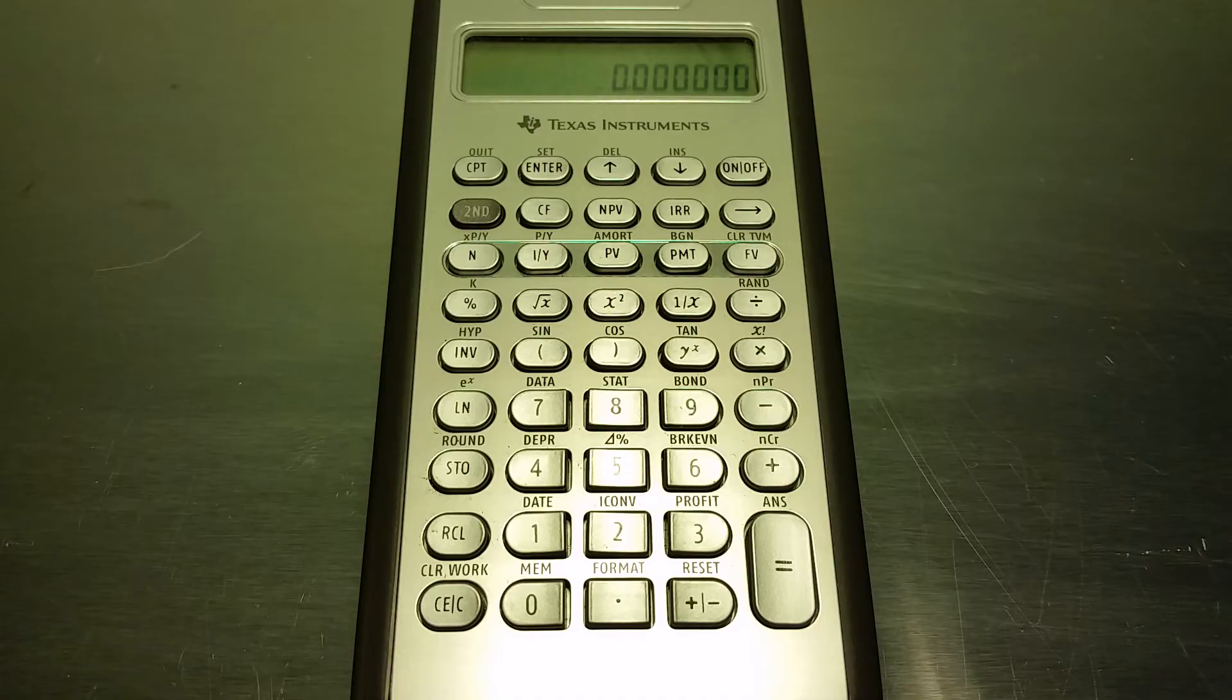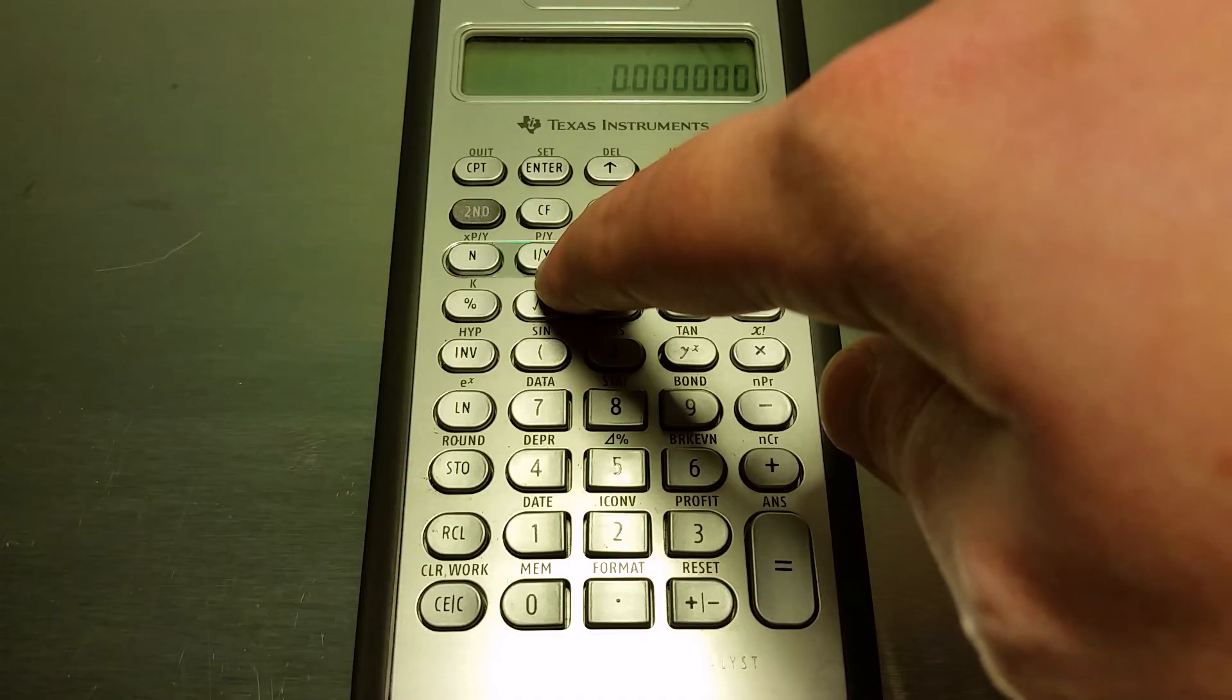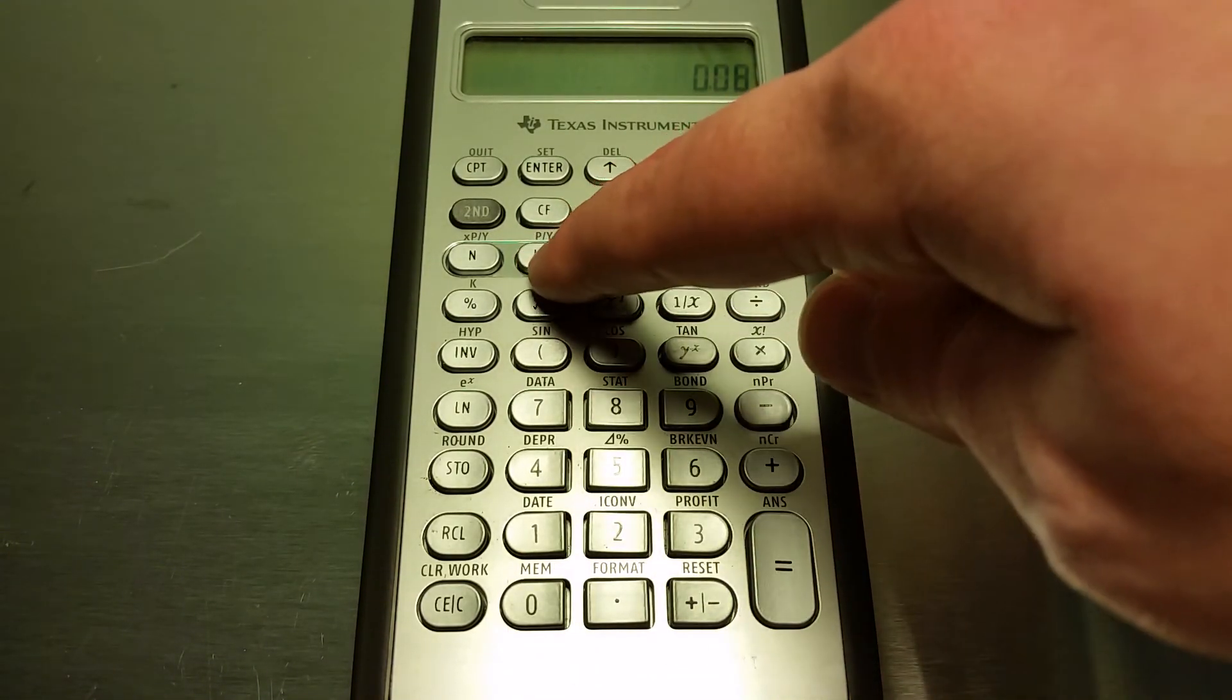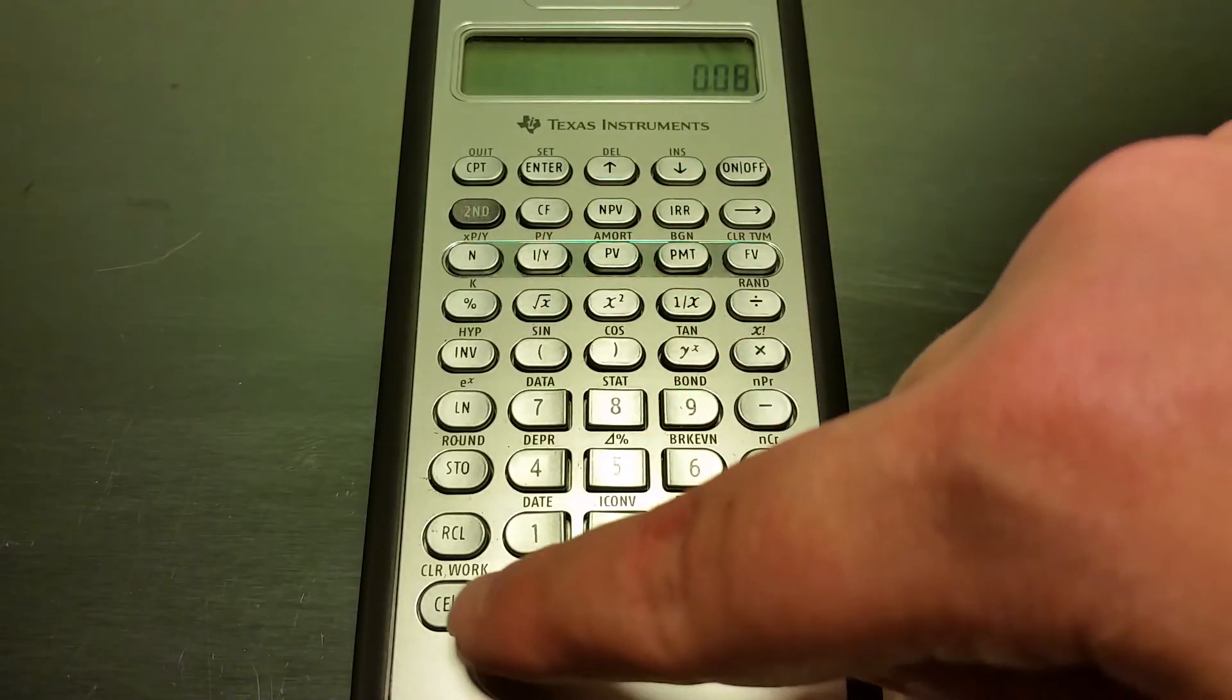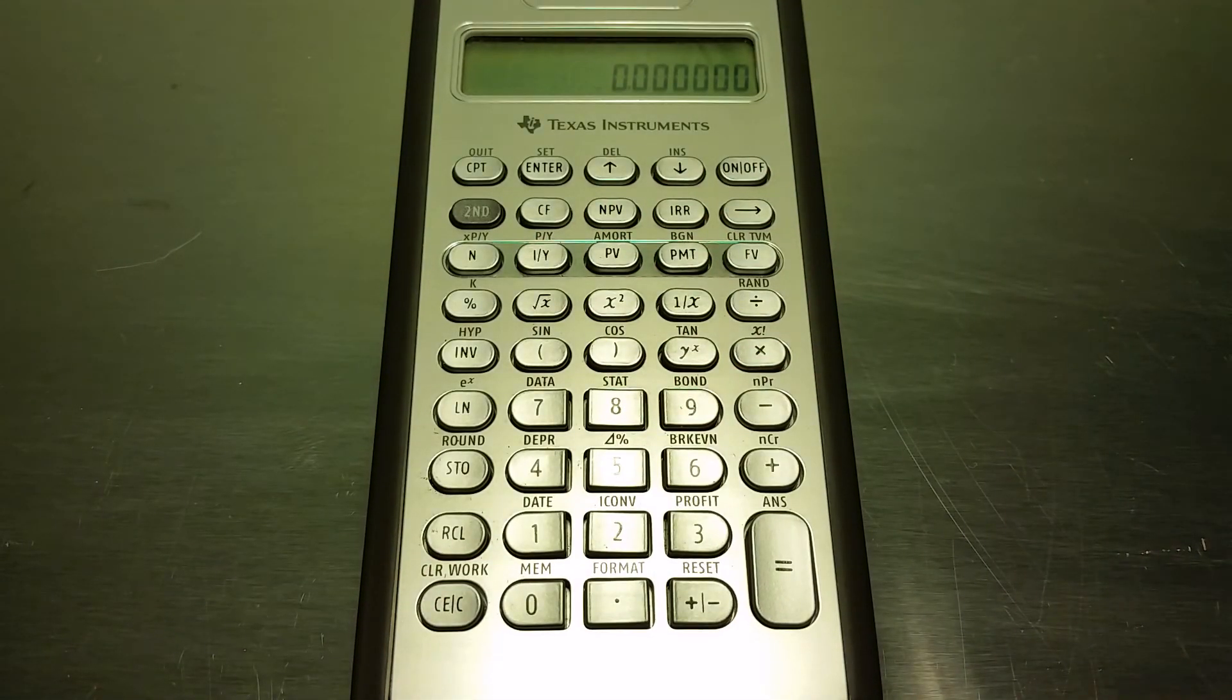Another common mistake that we typically see is financial calculators assume that rates are quoted in percentages. Let's just say you have eight percent and you want to type that into your interest rate button. You're not going to type in 0.08 and then click the interest rate button to enter it in. Since your calculator is assuming that it's quoted as a percentage, you're going to type that eight percent as just eight and then click the interest rate button. Now it's set in as eight percent.